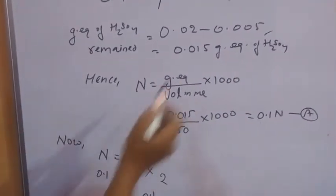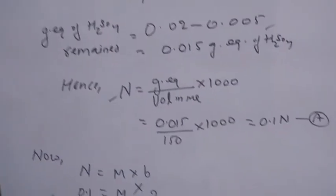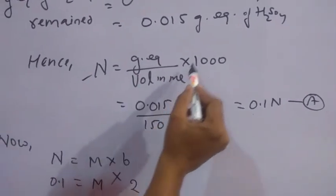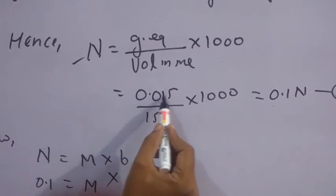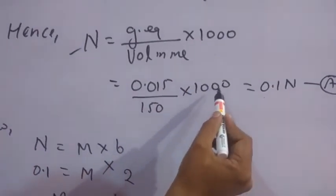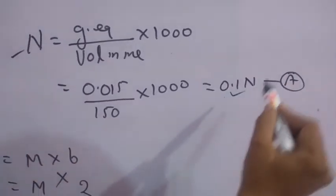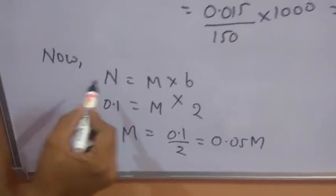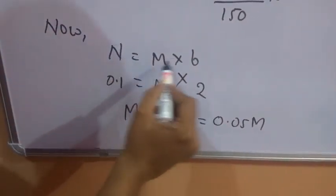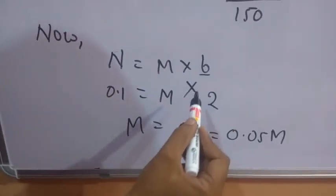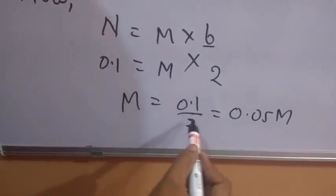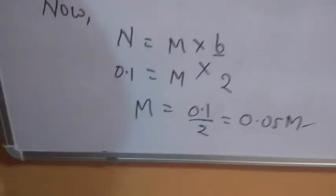Once you have the remaining gram equivalents, calculate the normality using the formula: normality equals gram equivalents divided by volume in millilitres multiplied by 1000. Gram equivalents are 0.015, volume is 150 ml, so normality equals 0.015 divided by 150 multiplied by 1000, giving 0.1 N. This is the normality of the third solution. Then applying normality equals molarity into basicity, since the solution contains only the acid H₂SO₄ with basicity 2: molarity equals 0.1 divided by 2, giving 0.05 molar.